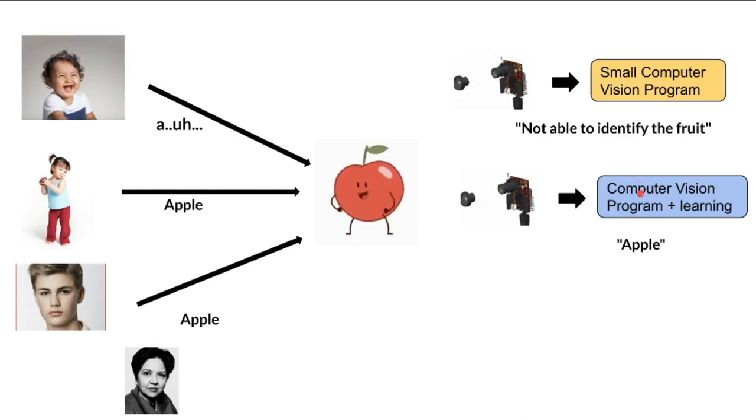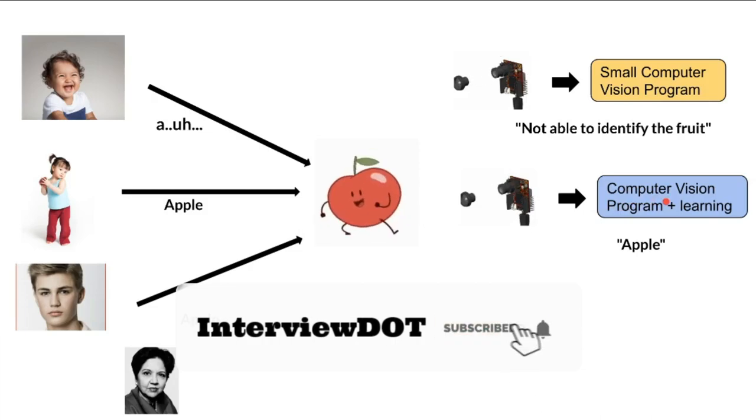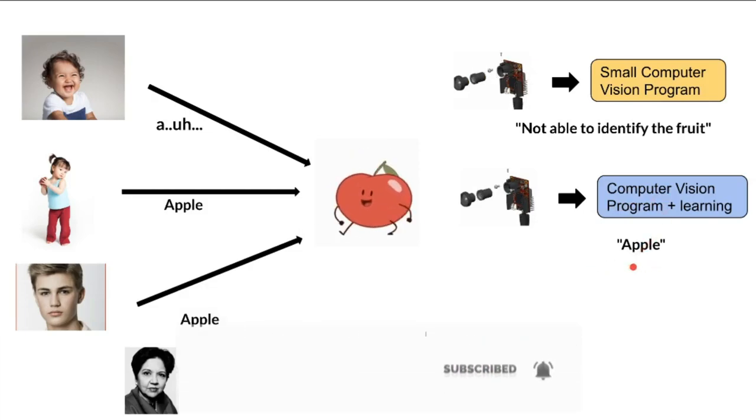In the next stage, I've given more images to this computer program. It has stored multiple apple images in binary format in its database. When I show an apple image to this program now, it's going to capture the image, compare it with the images it has, and when I ask for the output, it's going to give me 'apple' as the output.